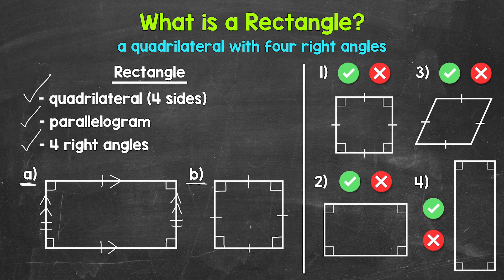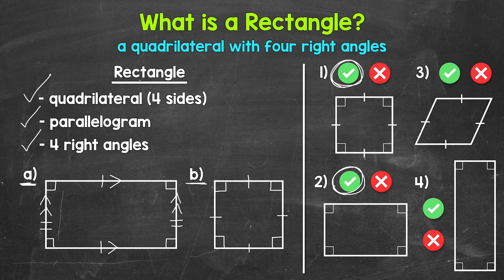Let's move on to numbers one through four, where we will determine if we have a rectangle or not. Green check mark means yes, red X means no. Number one: we have a quadrilateral with four right angles, so yes, this is a rectangle. All of the sides are the same length as well, so although this is a rectangle, the best and most specific name is square. Number two: we have a quadrilateral and four right angles, so yes, this is a rectangle. Number three: we have a quadrilateral but we don't have four right angles, so no, this is not a rectangle. Number four: we have a quadrilateral with four right angles, so this is a rectangle.